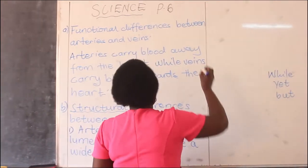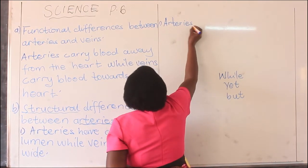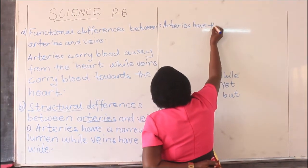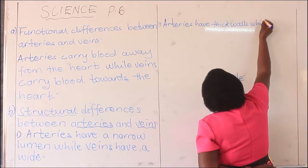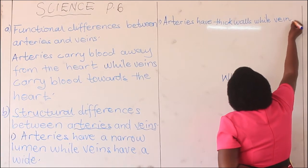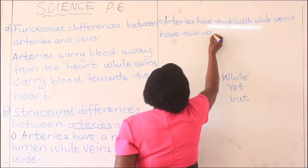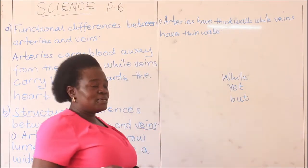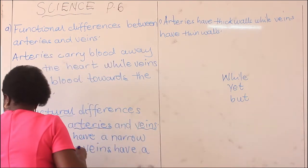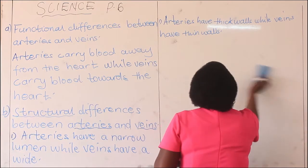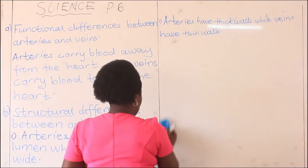The second structural difference says arteries have thick walls while veins have thin walls. We've already done these, children. I say them just for emphasis. We pick them out again and write them separately, so that when you're asked to give the structural difference between arteries and veins, you know there are only three. So far we've written two.